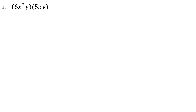Starting with monomial times monomial, we have 6x² y times 5xy. These are monomials because we don't see any plus signs in each of these terms. When we multiply these out we basically want to keep the coefficients separate, the x's separate, and the y's separate, and those will all multiply separately.